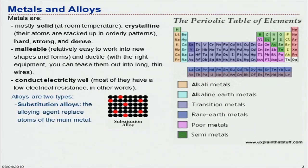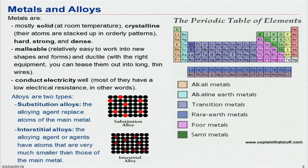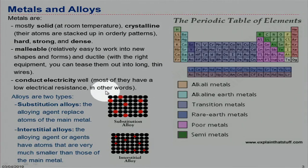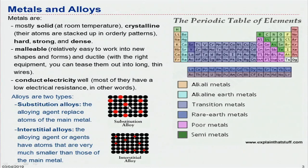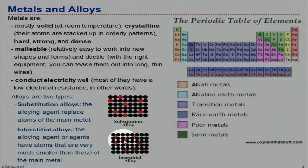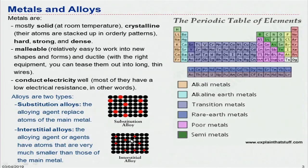For metals, we discussed two main types — it's a quick recap. We call them substitutional alloys and interstitial alloys. In substitutional alloys, we replace one of the atoms of the base material with the alloy element, and they are of similar size. In interstitial alloys, the small alloy agent atoms sit between the main atoms of the base material structure. These are the two main types of alloying methods: substitutional and interstitial alloys.